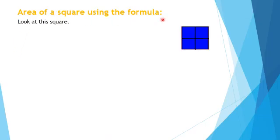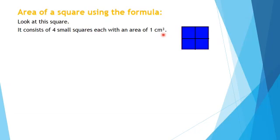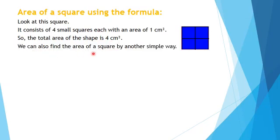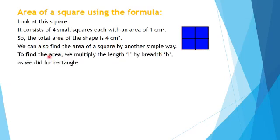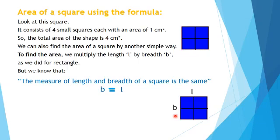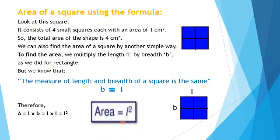Area of a square using the formula. A square consists of 4 small squares each with an area of 1 centimeter, so the total area is 4 centimeter square. To find the area, we multiply length by breadth, as we did for rectangles. Since the length and breadth of a square are the same, breadth equals length. Therefore, the area of a square is L × L, which equals L². So the formula for the area of a square is L².